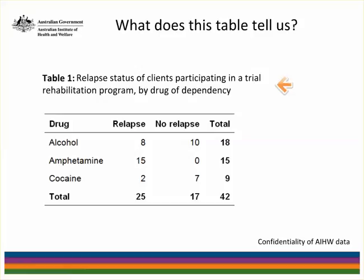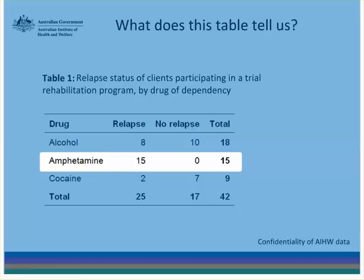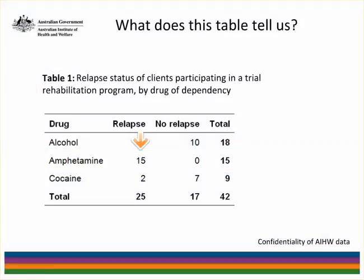Table 1 contains information about the relapse status of clients participating in a trial rehabilitation program. It contains information about the drug of dependency and also whether the client has relapsed or not. Take note of the row for amphetamine use. If you know a person who has taken part in the trial program and that their drug of dependency is amphetamine, this table reveals that they relapsed. This is attribute disclosure. The table couldn't be released in its current form and the Institute would undergo further work to confidentialise the data.